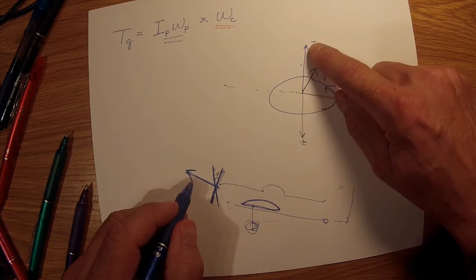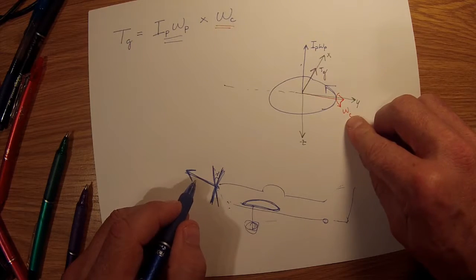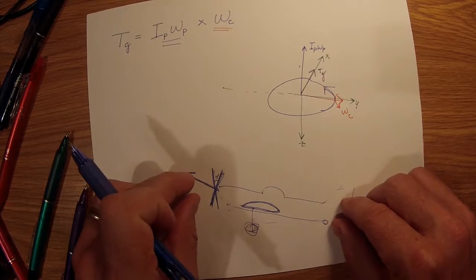What's going to happen is we had that angular momentum vector coming out perpendicular to the propeller, which was our I_P Omega_P, and suddenly this Omega C happened.